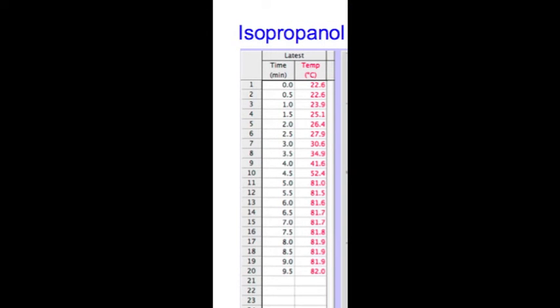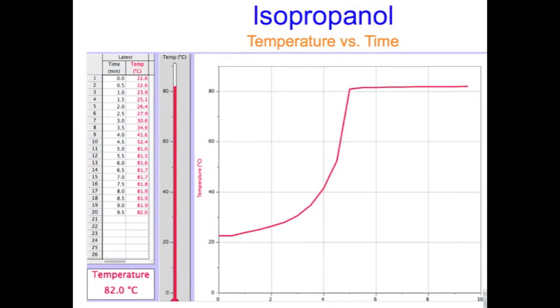Here is data for 50 milliliters of isopropanol, also called rubbing alcohol. You can see the temperature increasing until it reaches the boiling point and then the temperature plateaus. Here is a graph of that data.